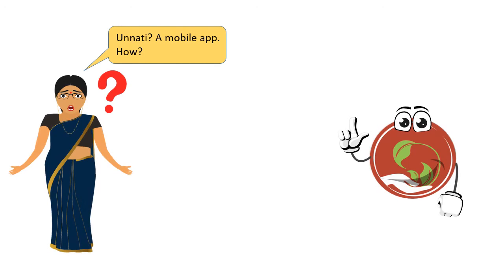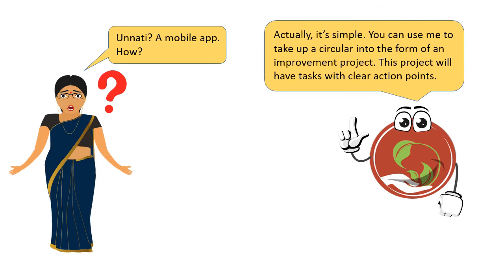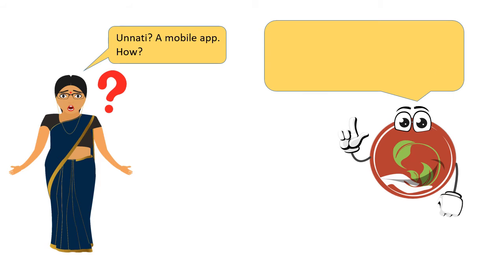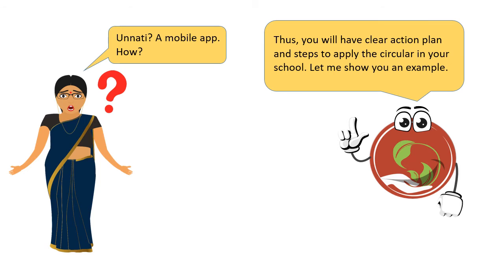Unnati, a mobile app — how? Actually, it's simple. You can use me to take up a circular into the form of an improvement project. The project will have tasks with clear action points. Thus, you will have a clear action plan and steps to apply the circular in your school. Let me show you an example.